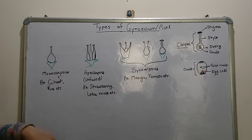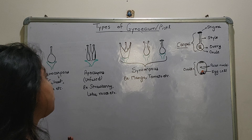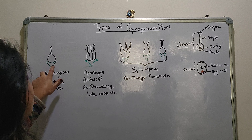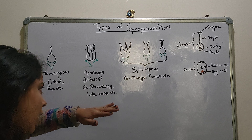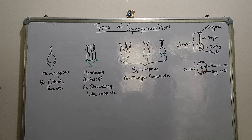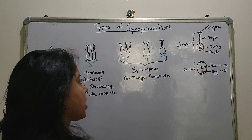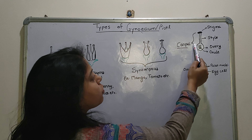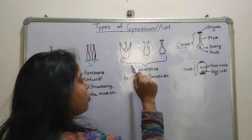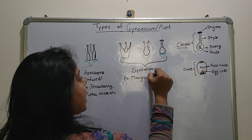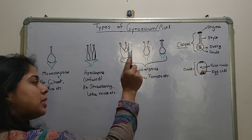Now let's go to the types: Monocarpous, Apocarpous, and Syncarpous — all derived from the word carpel. Monocarpous means there is a single carpel, and this condition is seen in wheat and rice. Apocarpous means all carpels are separate — there is no fusion, everything is different. This unfused condition can be seen in strawberry, lotus, and roses.